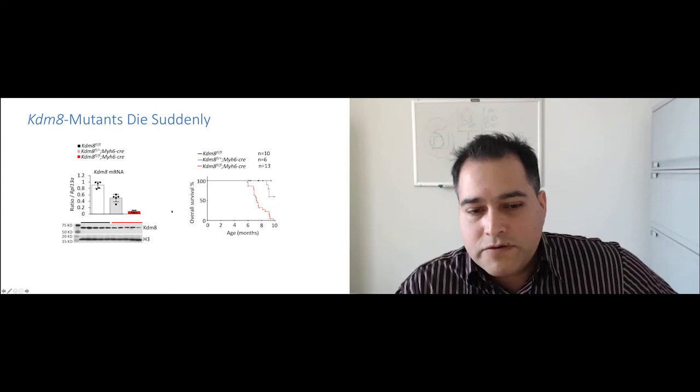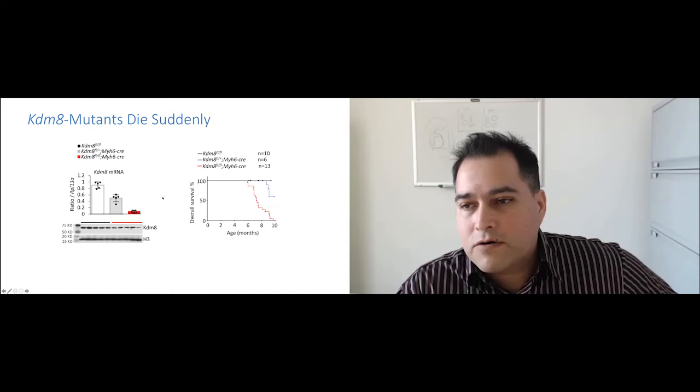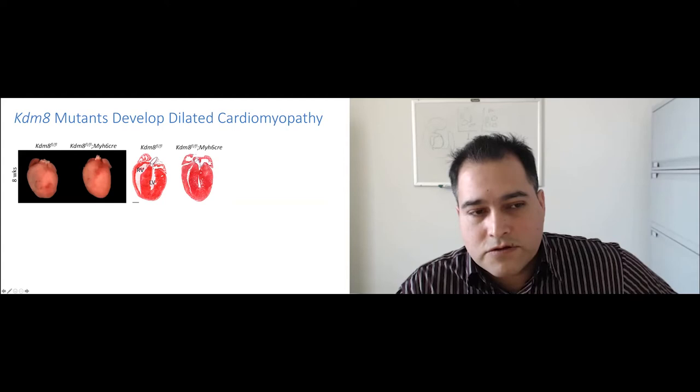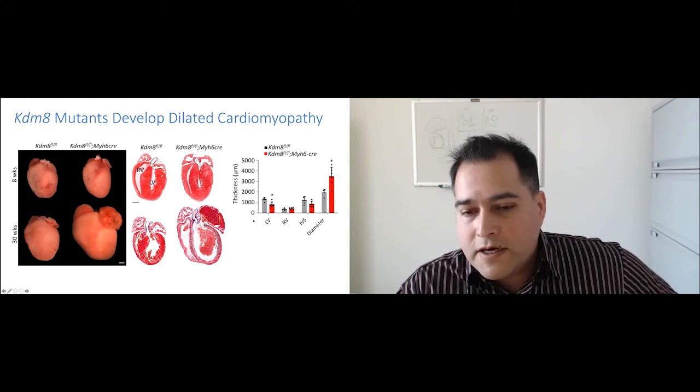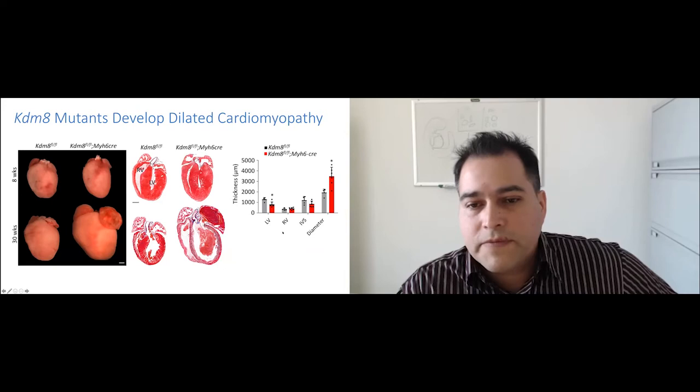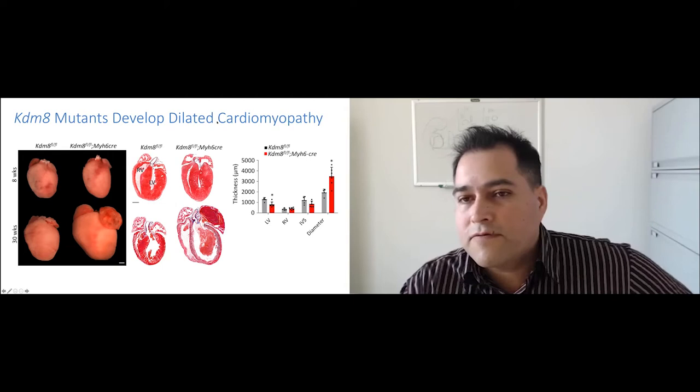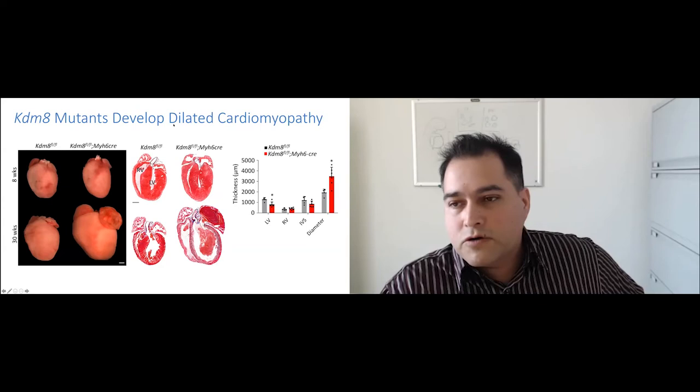I'm not showing you the data here, but actually the levels of K36 dimethylation also are increased globally. And what Abdallah found is when he analyzed hearts at eight weeks of age, the hearts look pretty comparable to controls. As you can see here in the whole hearts and also sections stained with Masson's trichrome staining. However, when he analyzed the mutants at 30 weeks, they were obviously enlarged. And the histology analysis showed a very clear dilation of the left ventricle. And he quantified this and as expected, the thickness of the left ventricle is decreased and the diameter of the left ventricle is increased as you can see here in the quantification. Indicating that these mice are dying of heart failure caused by dilated cardiomyopathy.